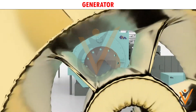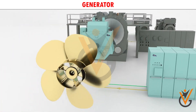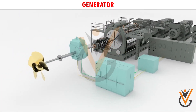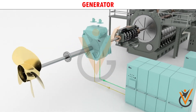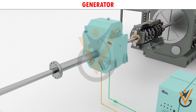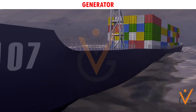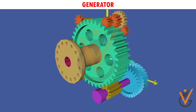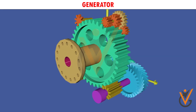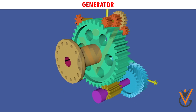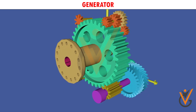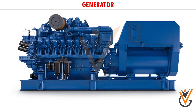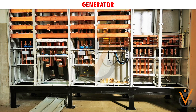Many ships are equipped with shaft generators, where the rotation of the main engine of the ship is used to operate the alternator and generate additional electricity. As main engine speed varies per the requirement of the ship, a gearbox arrangement is provided to supply a constant speed to the shaft alternator. The power generated by these marine generators is transported to the main switchboard using a busbar.